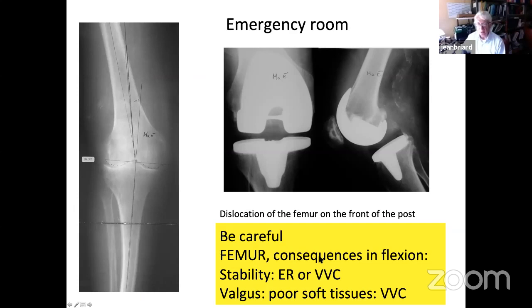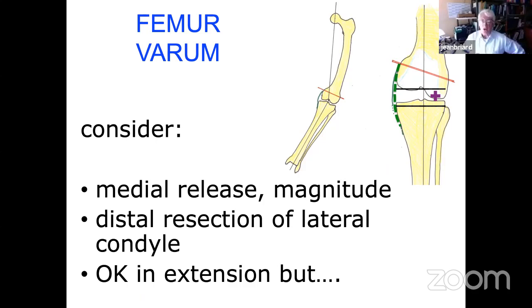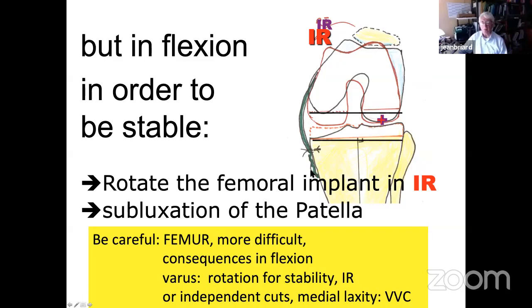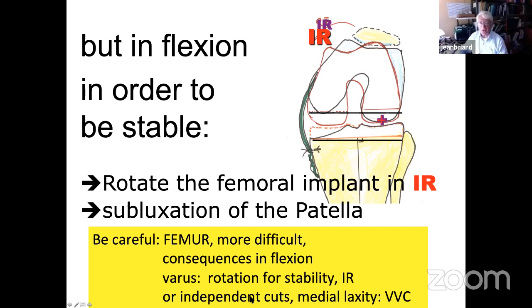For femoral valgus deformity: in flexion there is risk of forced tissue, and you may need a constrained knee (VVC). For femur varum — another femoral deformity — you do a release and make cuts perpendicular to the mechanical axis, and it's fine in extension. But in flexion, you lengthen the lateral structures, so for stability you have to rotate the femur in internal rotation. The patella will then be at risk of subluxation. Femoral extra-articular deformity is always more difficult, with consequences in flexion including internal rotation for stability and risk of medial laxity requiring a constrained knee.